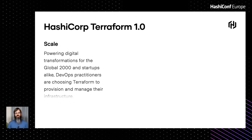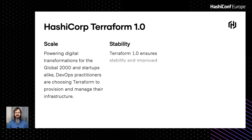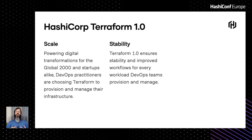Let's get into Terraform 1.0. A little bit about why this is significant: if you've been wondering how we get from a 0.x release into a 1.0 release, a lot of this comes down to being able to support the scale of pretty much any company or organization — from startups to the Global 2000 or even individual DevOps practitioners. Millions of practitioners are choosing Terraform as the way to manage and provision their infrastructure. Terraform 1.0 ensures stability as well as improves the workflow so that regardless of what workload is being provisioned and managed, it's going to be done consistently.